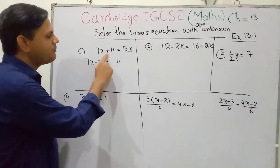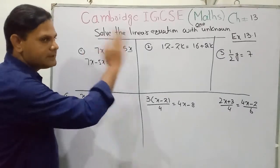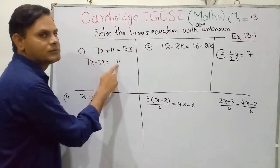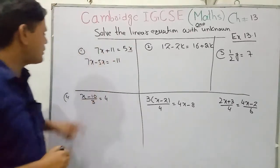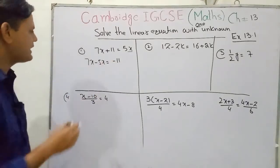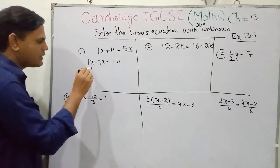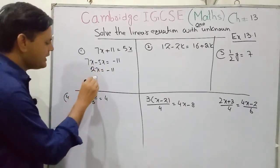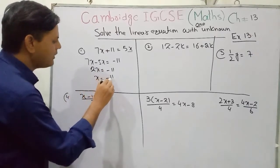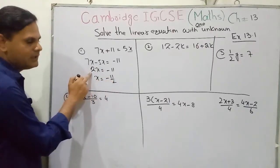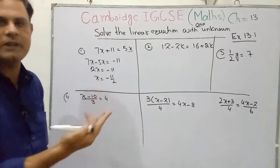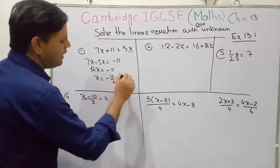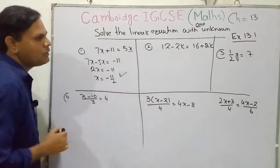When you change this sign — plus 11 taken to the other side of the equal sign — you also change the sign to negative. So we write negative. So 7x minus 5x gives 2x equal to minus 11. So x is equal to minus 11 by 2. When a quantity is multiplied on one side and you take it to the other side of the equal sign, this number will be divided. So this is the solution of this equation.